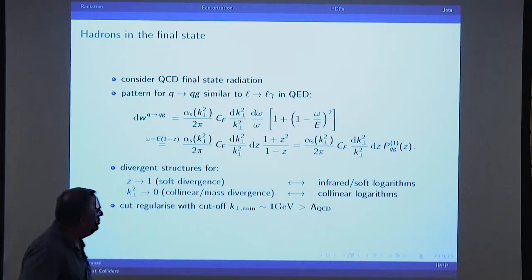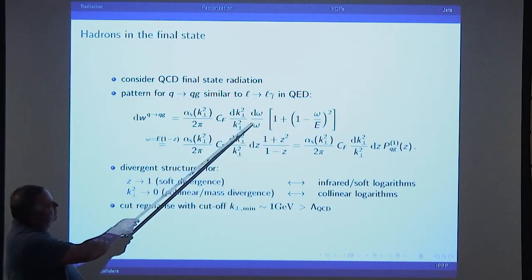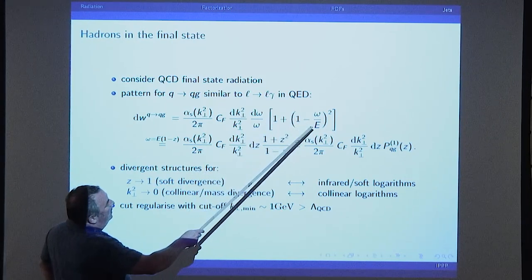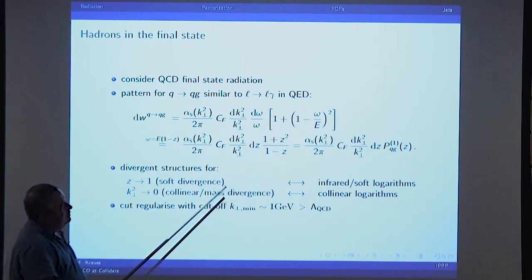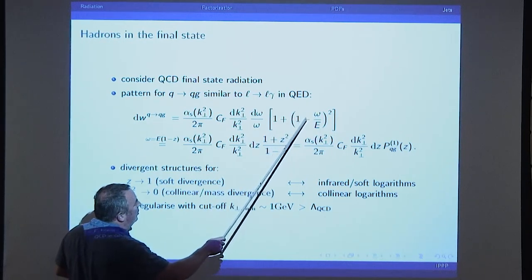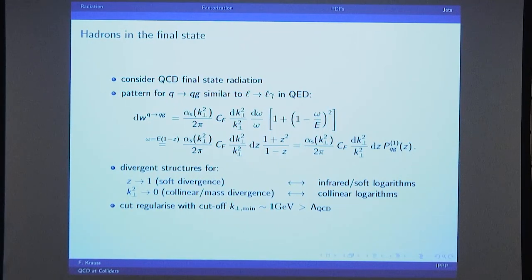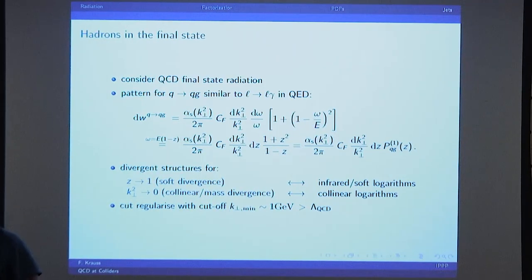Pretty much the same structure — this time it's an alpha_S charge factor of the quark, dk perp over k perp, dω over ω. In the limit where the energy of the gluon ω gets small, you get the factor of two which cancels this two. Yesterday we very briefly looked at what happens quantum mechanically, and it turns out this term ω, this term (1 - ω/E), is the effect of the spin-1/2 nature of the quark.